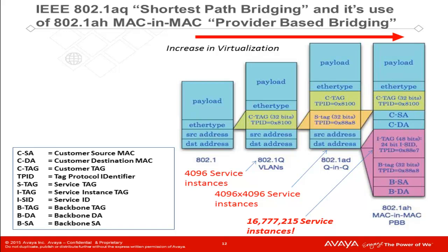It is important to clarify what an ICID is. It is not a broadcast or flooding domain. It is a subset of Dijkstra shortest path trees. It is also based on BMACs within the ISIS link state database. The 802.1AH frame gives us quite a bit of information to use in order to move data across the network. Let's take a closer look at how these ICIDs can be used to create virtualized services within the SPB network.